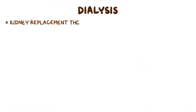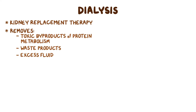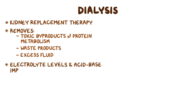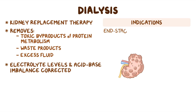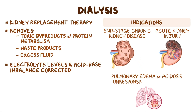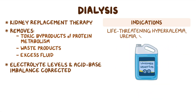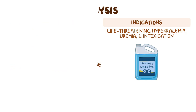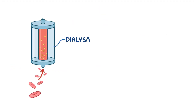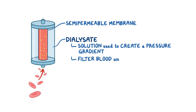As a quick recap: dialysis is a type of kidney replacement therapy that removes toxic byproducts of protein metabolism, waste products, and excess fluid from the body, as well as corrects electrolyte and acid-base imbalances. Dialysis is needed in clients with end-stage chronic kidney disease, acute kidney injury, pulmonary edema or acidosis unresponsive to conventional treatment, life-threatening hyperkalemia, uremia, and intoxication. Dialysis works by having the client's blood pass by dialysate — a special solution used to create a pressure gradient through a semi-permeable membrane — using the principles of diffusion, osmosis, and ultrafiltration.